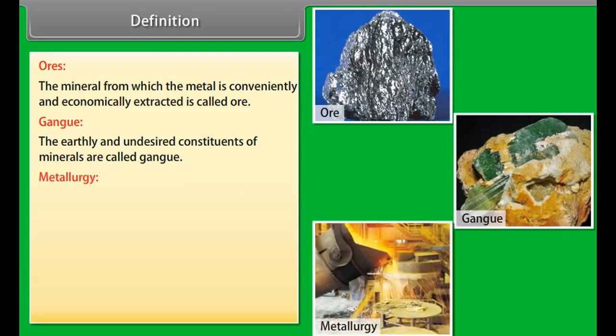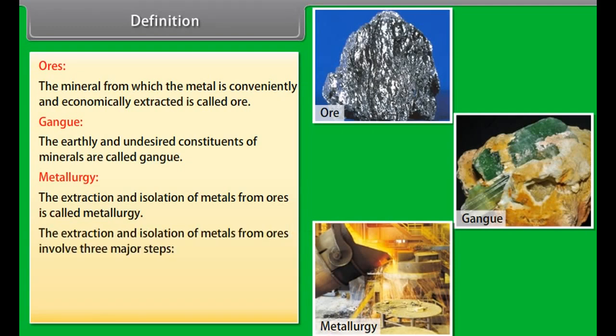Metallurgy: The extraction and isolation of metals from ores is called metallurgy. The extraction and isolation of metals from ores involves three major steps: Concentration of the ore, isolation of the metal from concentrated ore, and purification of the metal.